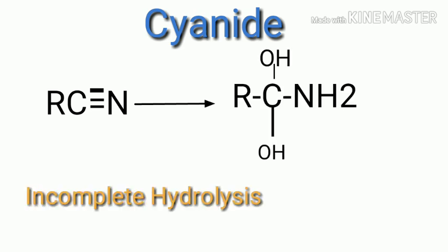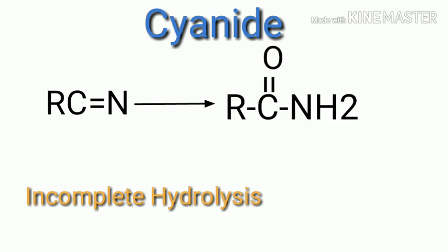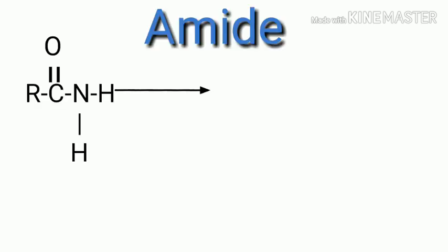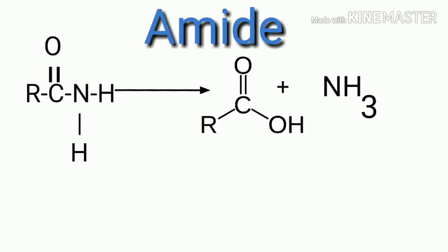In incomplete hydrolysis of cyanide, two nitrogen bonds will break and OH⁻ will add, then H₂O will leave, and finally we will get RCONH₂. So this covers both complete and incomplete hydrolysis in case of cyanide. Now we will look at amide: RCONH₂. The carbon-nitrogen bond breaks, carbon gets OH⁻ and nitrogen gets H⁺.